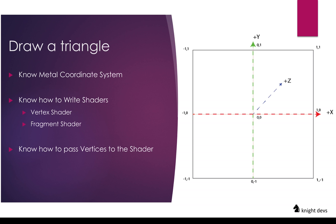Before drawing a triangle you should also know about the coordinate system of the Metal framework. In Metal, the X axis moves from -1 to +1, Y axis also moves from -1 to +1, and the Z axis moves from 0 to 1. This is different from OpenGL where the Z axis also moves from -1 to +1.